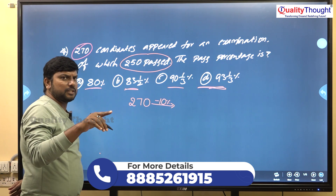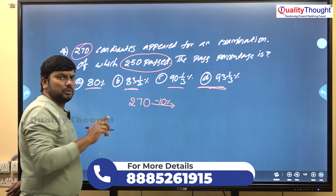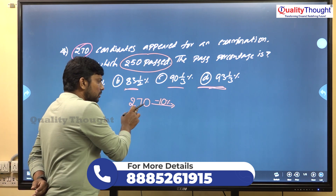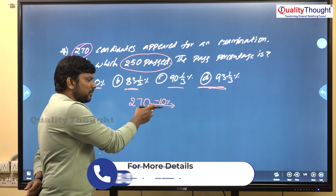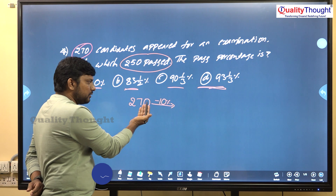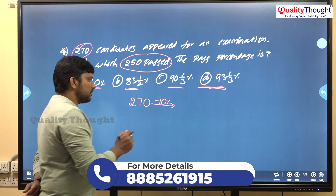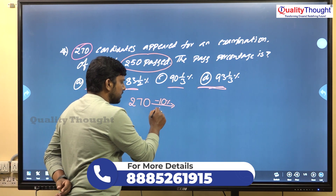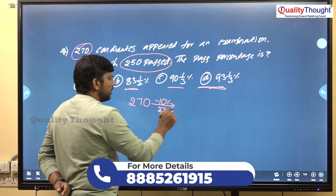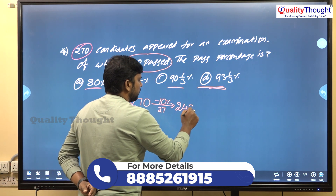Since 27 is the 10% value, you can use it here. 270 minus 10% is minus 27. So 270 minus 27 equals 243.